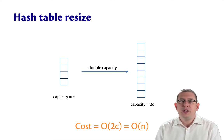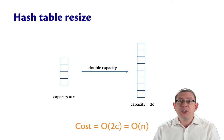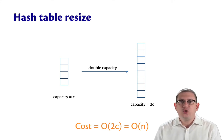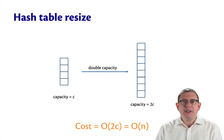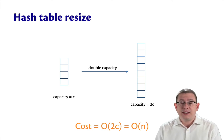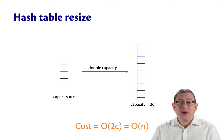Now, the number of bindings at the time of a resize was also going to be 2c, because we resized when we had twice as many bindings as buckets. So, let's call n the number of bindings. That means that the resize operation is itself an order n operation, because n equals 2c. Bad, right? We've got a linear time resize at this point in the worst case.